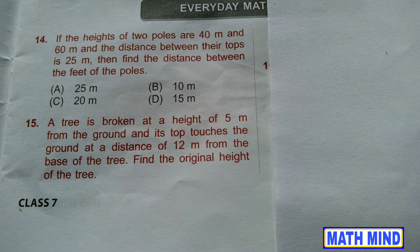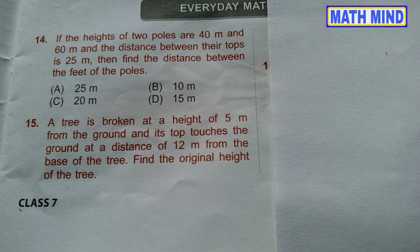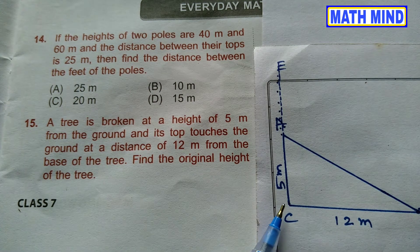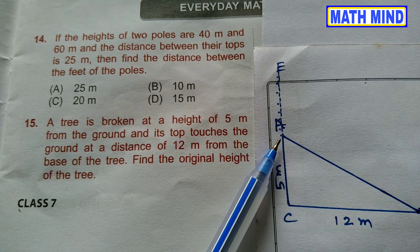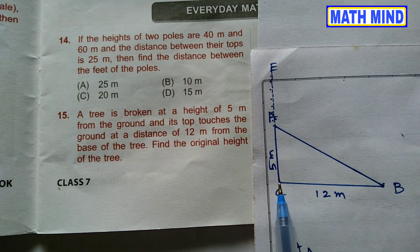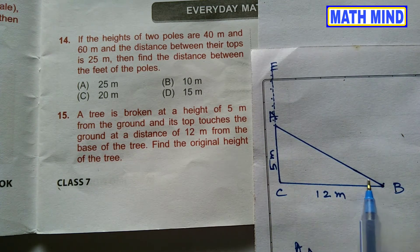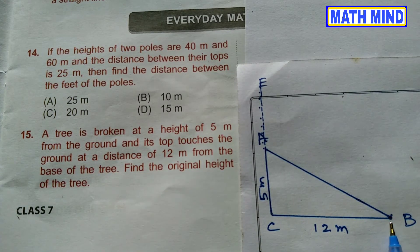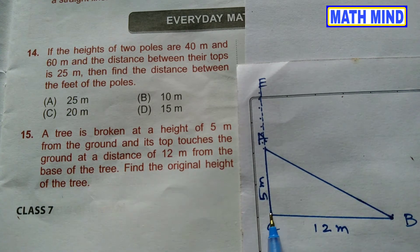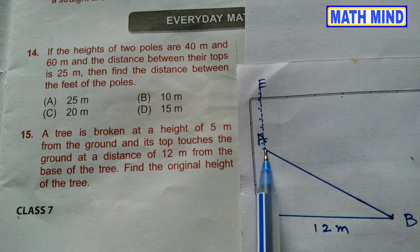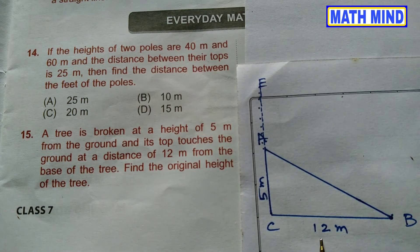Question number 15. A tree is broken at a height of 5 meters from the ground, and its top touches the ground at a distance of 12 meters from the base of the tree. Find the original height of the tree. The broken tree forms a right triangle. From the base of the tree, the distance to where the top touches the ground is 12 meters, with a right angle at C. The standing part is 5 meters and the base is 12 meters.